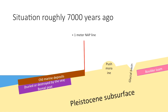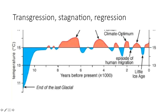Here is the situation where we left it in the early Holocene, roughly 7,000 years ago. We have the Pleistocene subsurface from before the ice ages, a push moraine from the bulldozing work of the land ice during the Saale ice age, glacial basins, some boulder loam where the ice crushed down on the Pleistocene subsurface, and everything eroded and filled through sedimentation. In the Weichselian ice age, lots of cover sands were deposited, the boulder loam was covered by a thick layer of sand, and in the early Holocene some boreal peat formed. Through transgression, marine deposits were then laid on top.